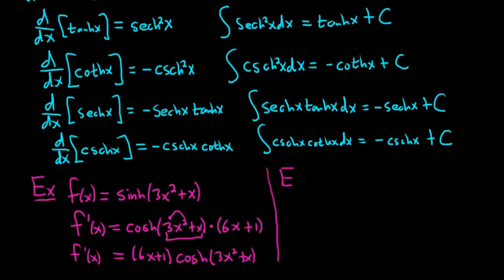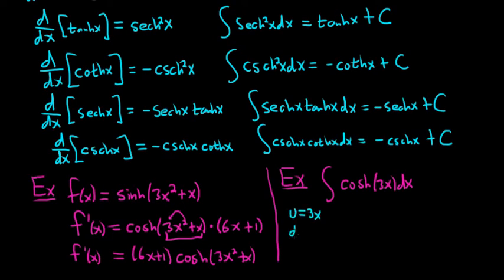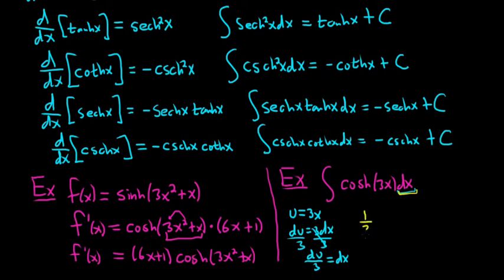Let's do one integral: the integral of cosh(3x) with respect to x. We use u-substitution — let u = 3x, so du = 3 dx, which means dx = du/3. We pull out the 1/3, and then we have (1/3) times the integral of cosh(u) du. Integrating cosh gives sinh, so this is (1/3) sinh(u). Substituting back, u = 3x, we get (1/3) sinh(3x) + C.